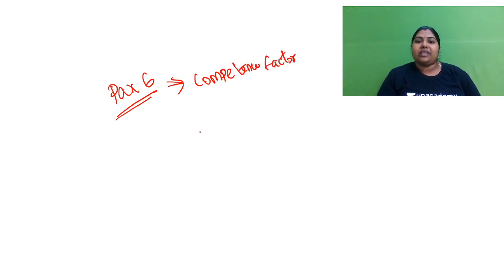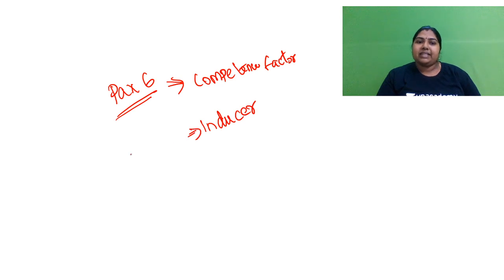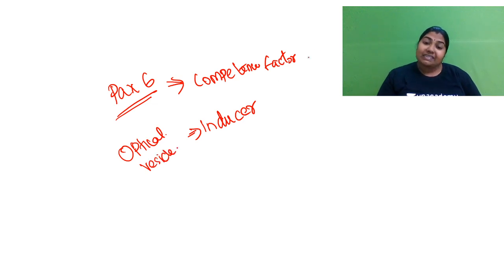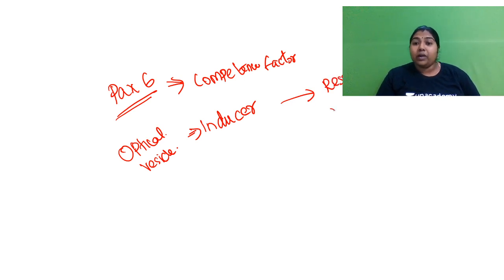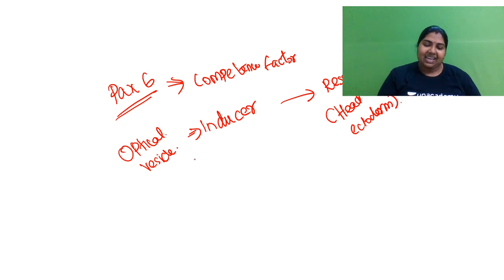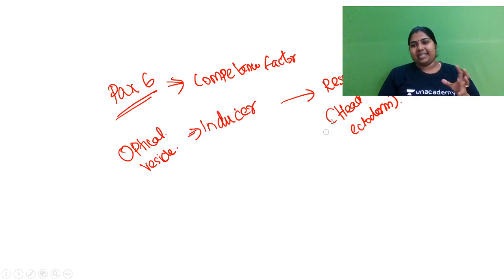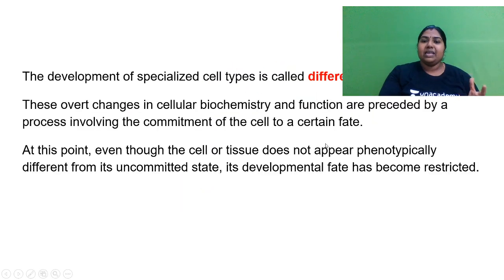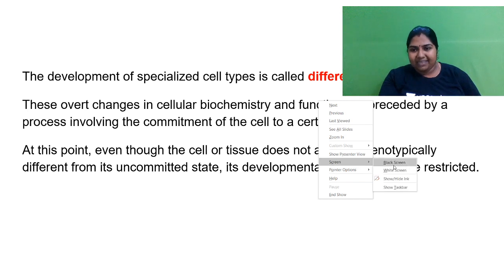So who is the inducer? The optical vesicle. Who is the responder receiving the signal? The responder is the head ectoderm. The inducer gives the signal, the responder receives it — but in between those two, you have the competence factor, which is PAX6. That is the key concept in competence and induction.